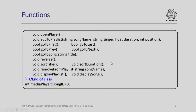We already discussed all of these functions: open player function, add to the playlist, go to first, go to prev, go to song, reverse, sort on title, sort on duration, remove from playlist, display playlist, and display song. Remember the last two functions are merely for illustration. Please note carefully the parameters passed to some of these functions — add to playlist will obviously have a song name, singer, duration, position, etc. The media player song ID is initialized to 0; we used a static integer and this is set to 0 because initially there are no songs in the playlist.